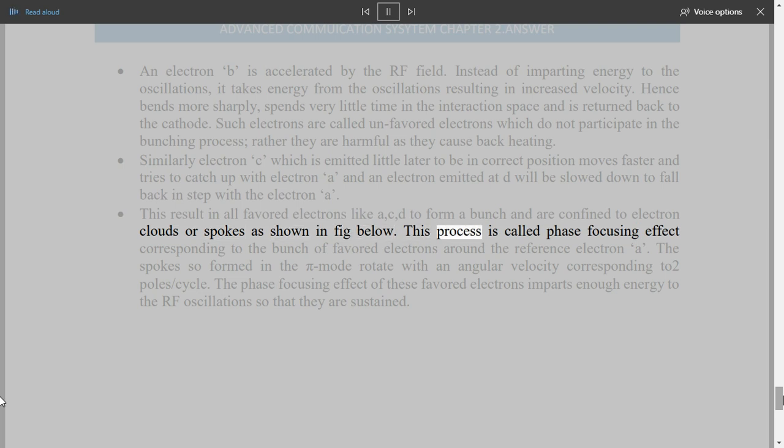This results in all favored electrons like A, C, D to form a bunch, and are confined to electron clouds or spokes as shown in figure below. This process is called phase focusing effect corresponding to the bunch of favored electrons around the reference electron A. The spokes so formed in the pi mode rotate with an angular velocity corresponding to two poles slash cycle. The phase focusing effect of these favored electrons imparts enough energy to the RF oscillations so that they are sustained.